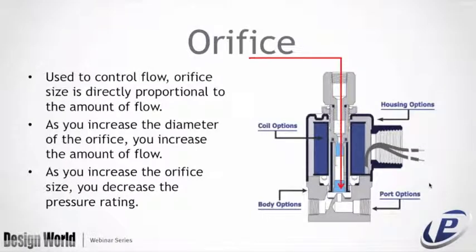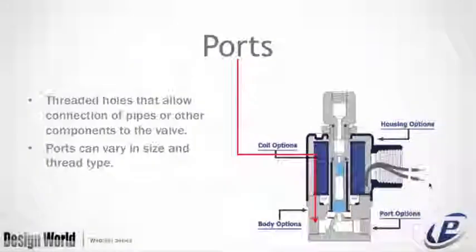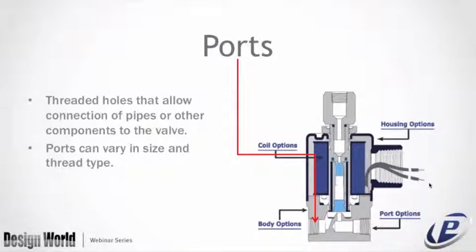Mechanical characteristics: the orifice is used to control flow. Orifice size is directly proportional to the amount of flow — as you increase the diameter you increase flow, but as you increase the orifice size you decrease the pressure rating. Ports are threaded holes that allow connection of pipes or other components to the valve. Port configurations range from 10-32 to 1/8 MPT to 3-inch MPT. BSP, metric, SAE, O-ring, British pipe ports, and others are available.